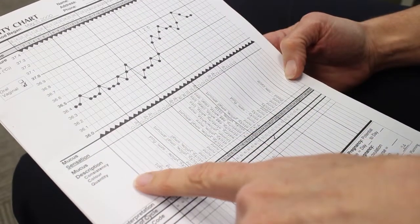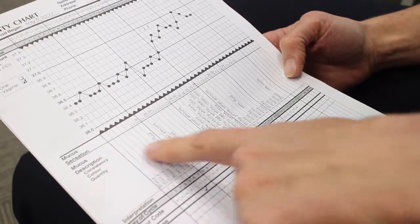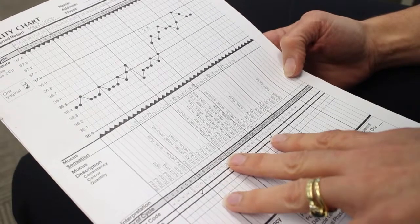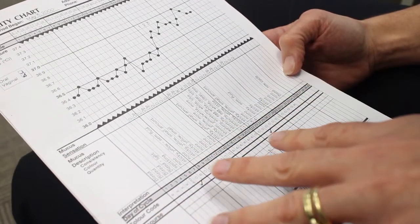The mucus sensation and description is a different part of the chart, and that helps you identify your fertile time within your cycle or your periovulatory time.